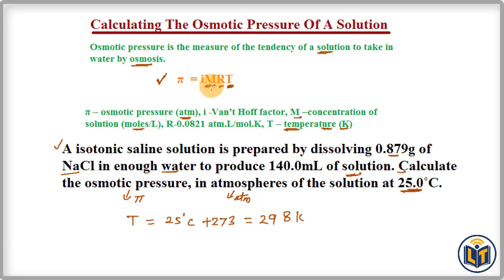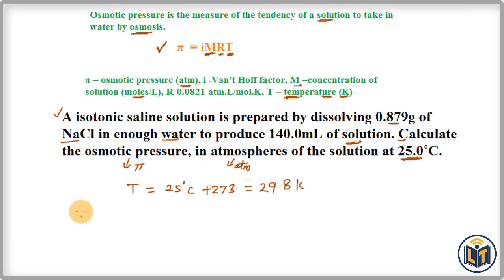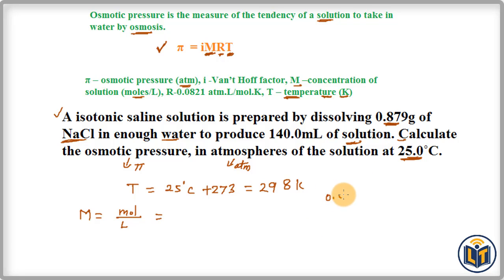Next, we find the molarity of the solution. The formula for molarity is: Molarity = moles of solute / volume of solution in liters. First, we need to convert the mass of NaCl into moles. The mass of NaCl given is 0.879 grams.